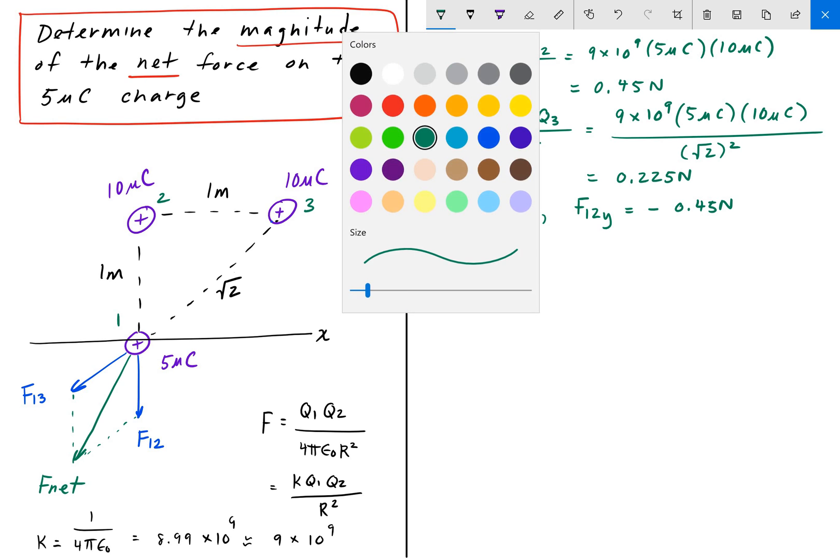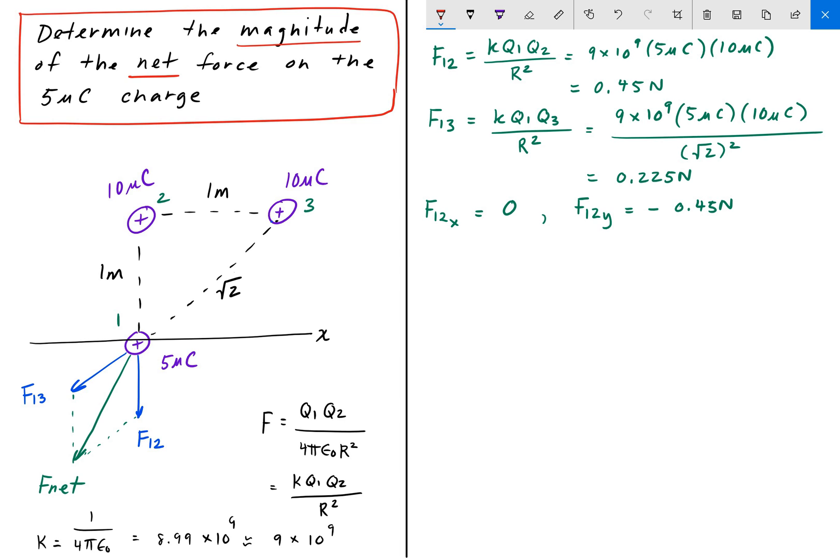And to find the components of force 13, we need to find this angle here. We'll call that angle theta. And so we want to find this component here, which is the Y component. So that's F13Y. And we want to find the X component, which is this component here, which is F13X. And if we have that theta value, we can use trigonometry and figure out the values of those components.